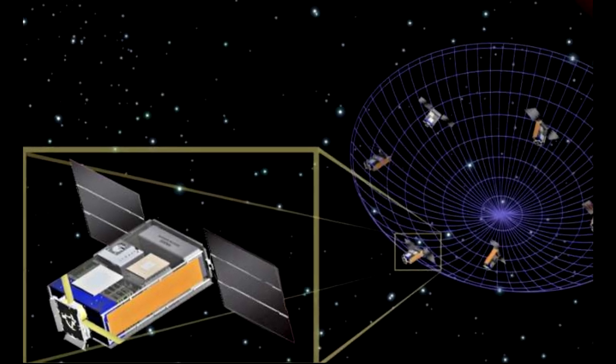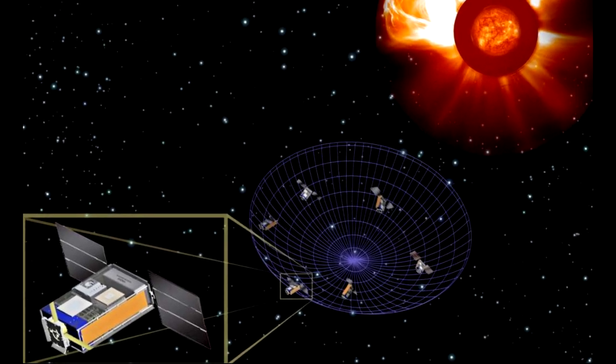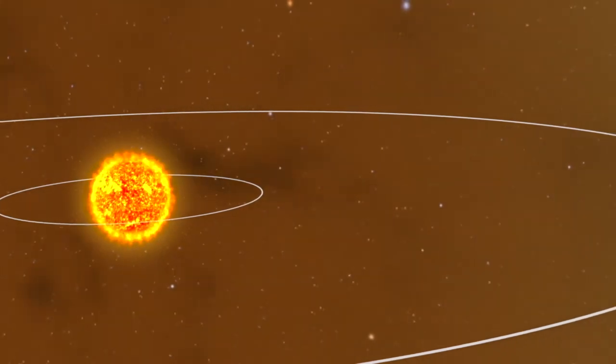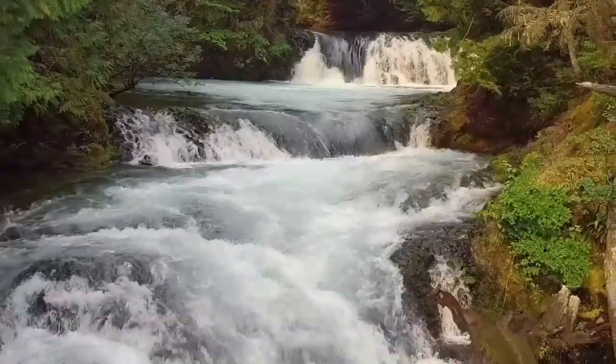Six small spacecraft will fly in a supersynchronous Earth orbit within about 10 km of each other and image the Sun in a portion of the spectrum that is blocked by the ionosphere and cannot be observed from Earth.